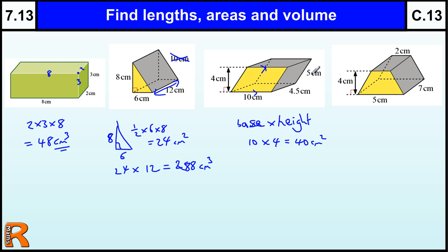And then we times it by the 4.5, not by the 5, that's just this length here which is not important. So we've got 40 times by 4.5, and that's going to give us, well, 4 times 40 is 160, and a half of 40 is 20, so 180 centimeters cubed.